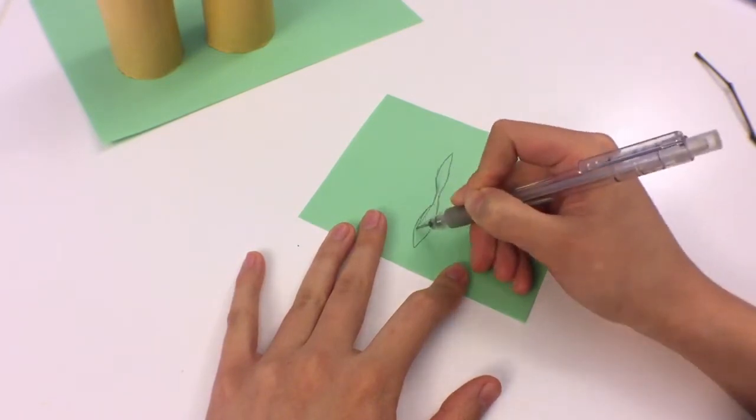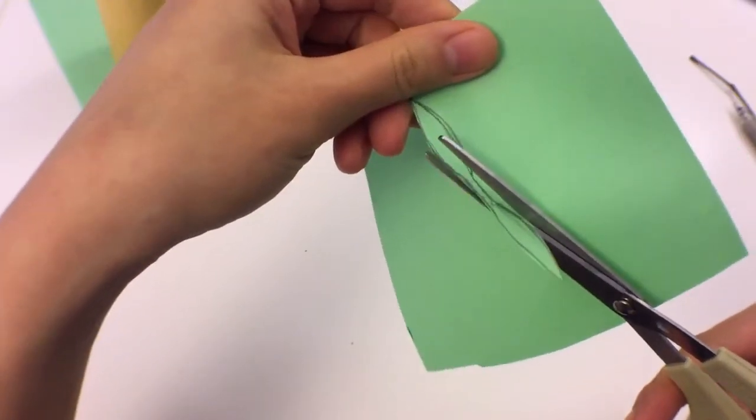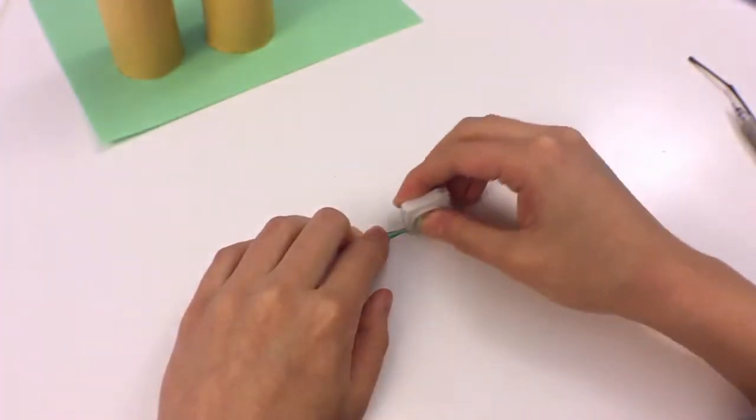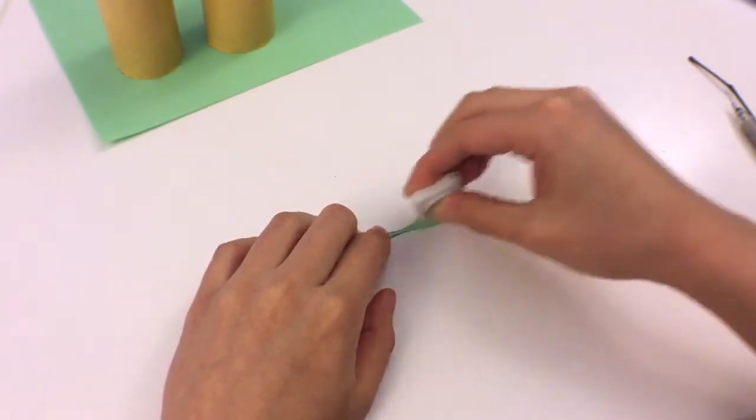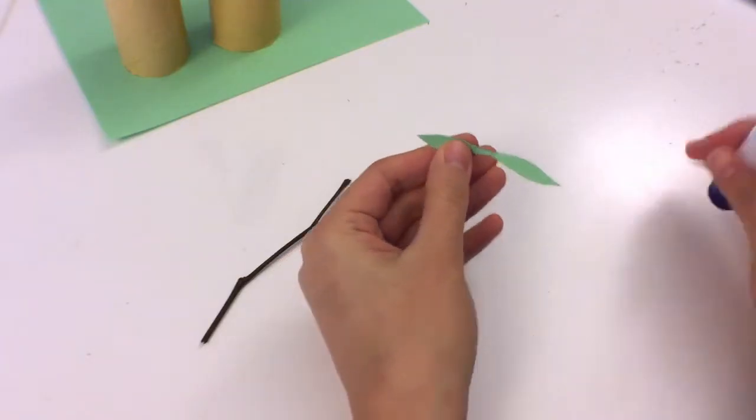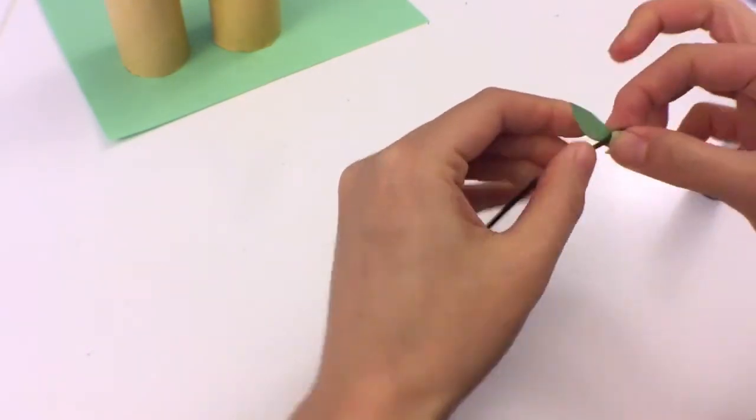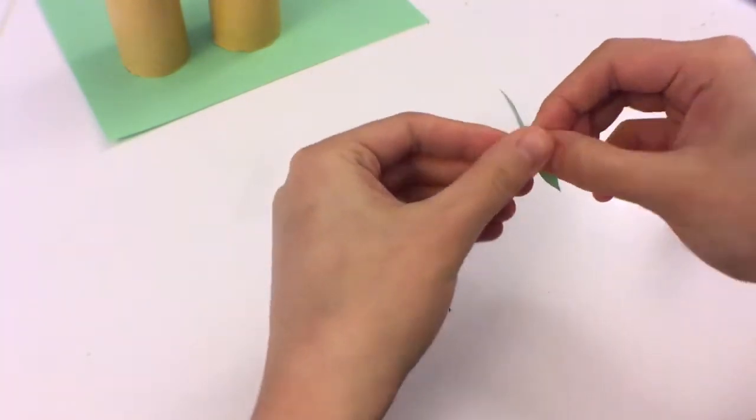I'm just going to cut out this one that I drew. And to make it look nice and neat, I went ahead and erased the pencil marks that I left behind as well. Now, apply a generous amount of glue to the center part and wrap it around the tree branch to glue it in place.